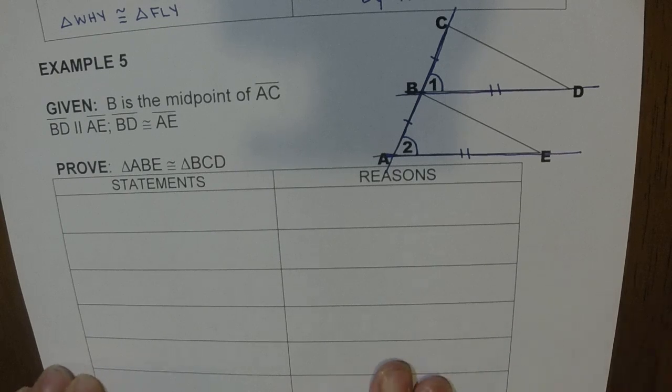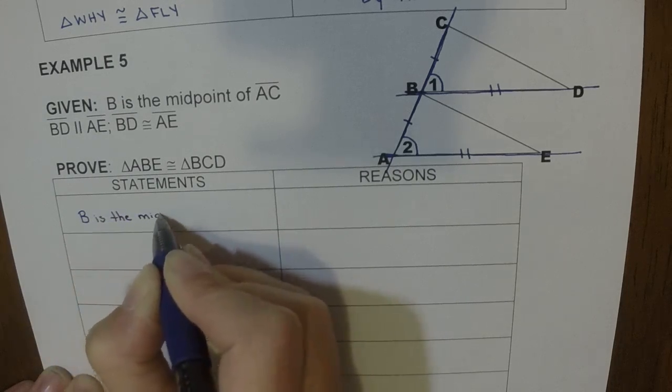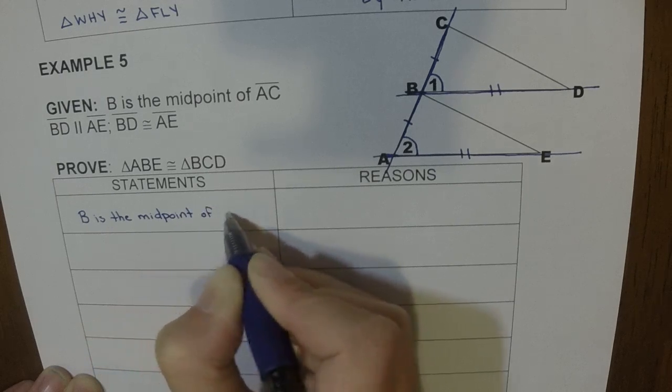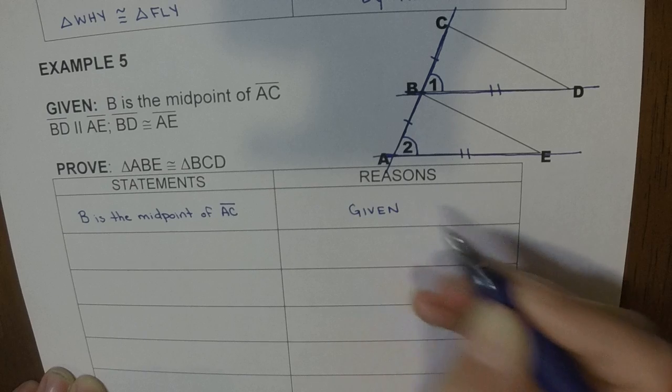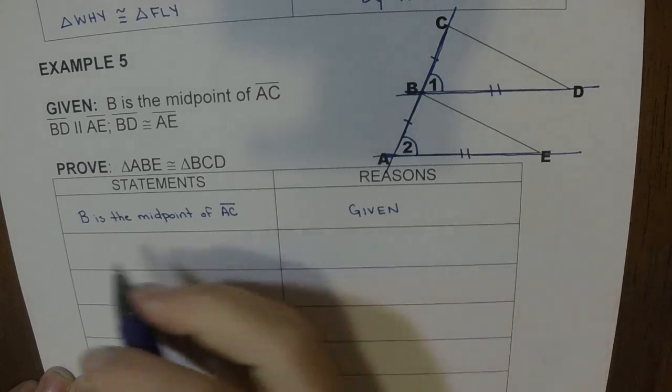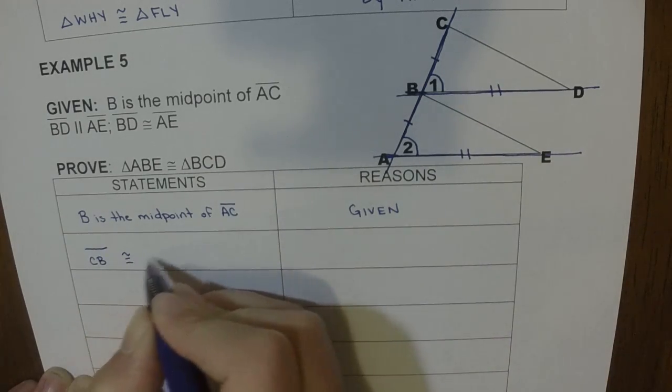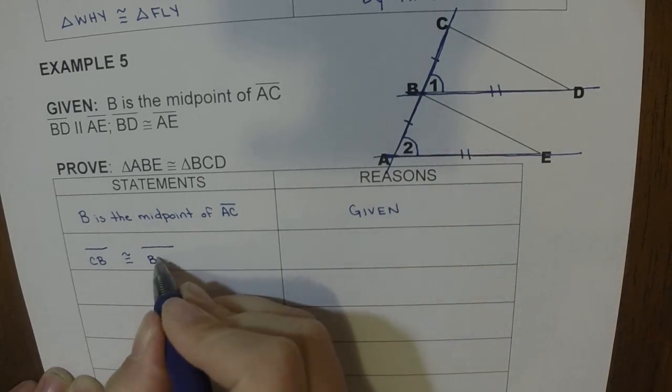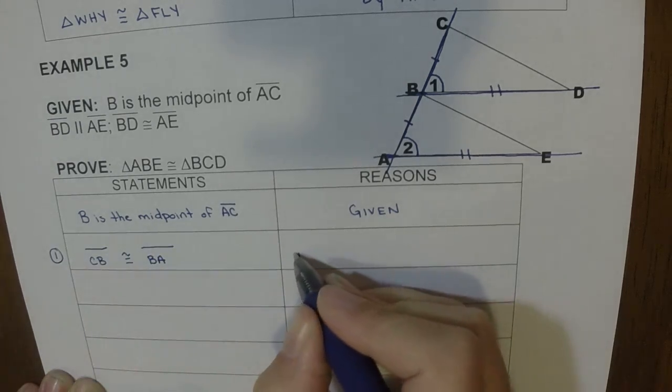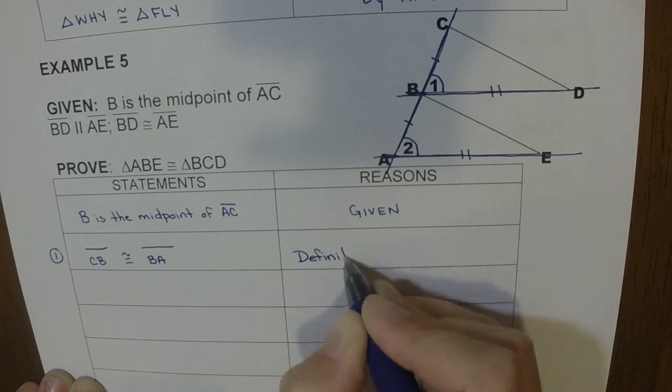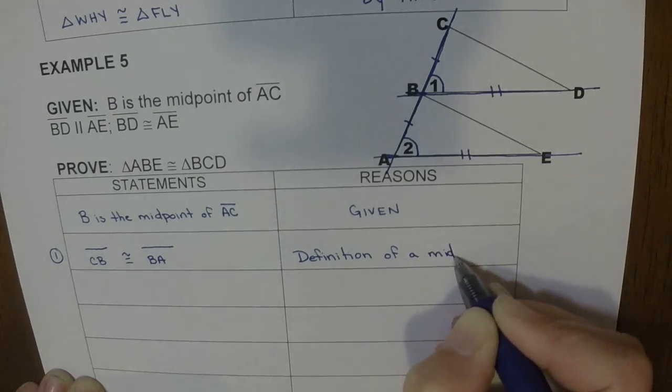So let's see if we can work the proof. First thing we write is the first given. B is the midpoint of AC. And the reason is given. That isn't a congruency, but the congruency that we figured out on our picture was that CB was congruent to BA. So this is a congruency, and this is by definition of a midpoint.